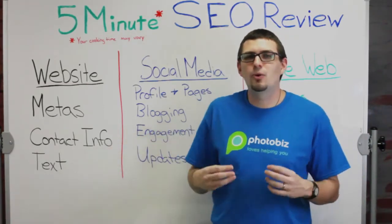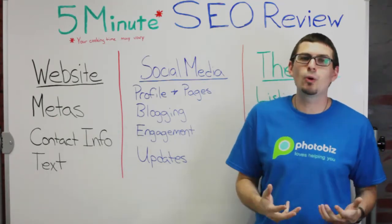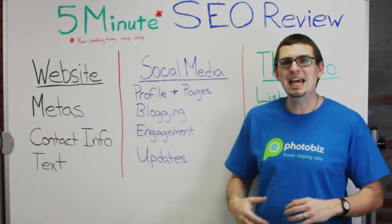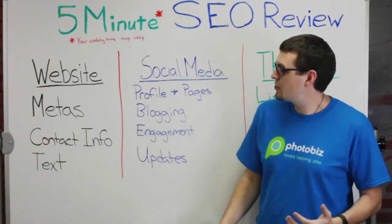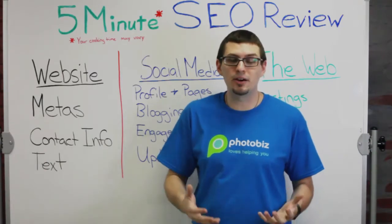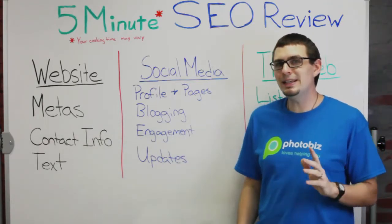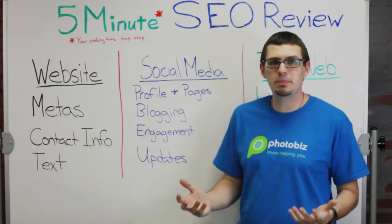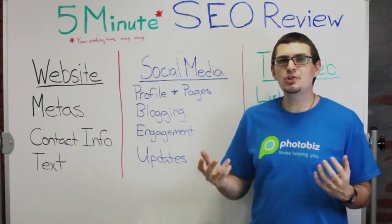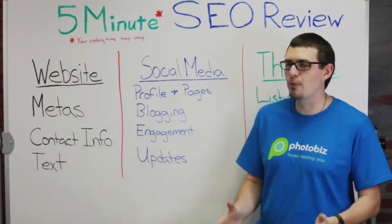The last website item we're going to look at is text. A big thing that a lot of photographers miss is that while the images on your website are what sell your business to the visitor, the text on your website is what lets Google know you're a trustworthy company that knows what it's doing. Every information page should have at least two to three paragraphs of text. If you find yourself with a page that just says 'for more information please contact us,' you should consider having a frequently asked questions page. This gives more text for Google to read, and it establishes that you as a business owner know what you're talking about.